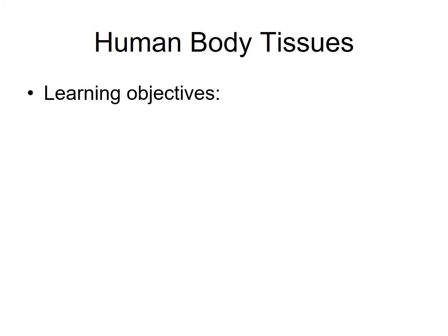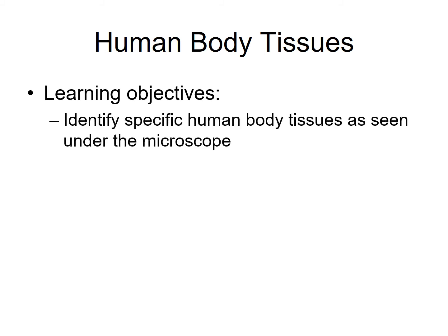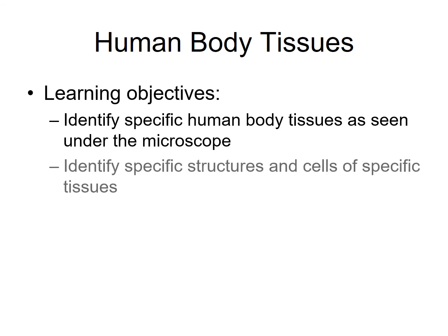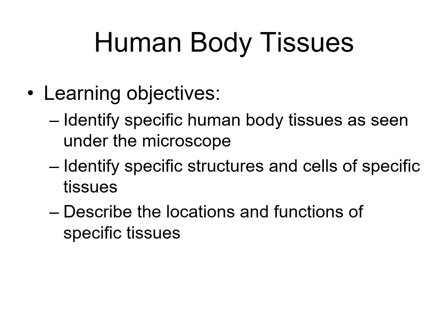These are your learning objectives for this lab. You are expected to be able to identify specific human body tissues as seen under the microscope. You'll be responsible for being able to identify specific structures and cells of these tissues, and you'll also need to know the locations and functions of these tissues.